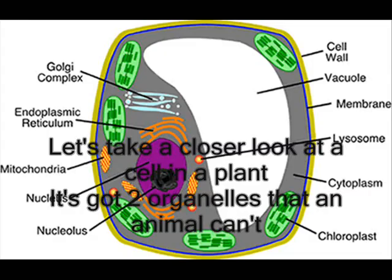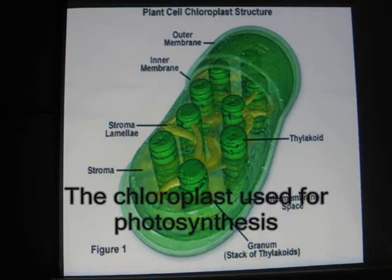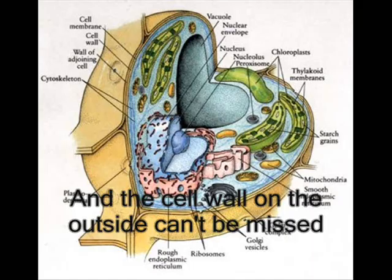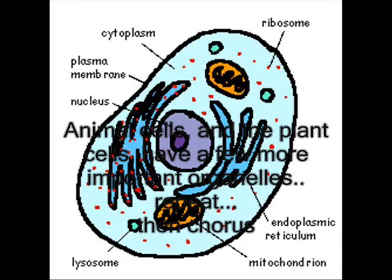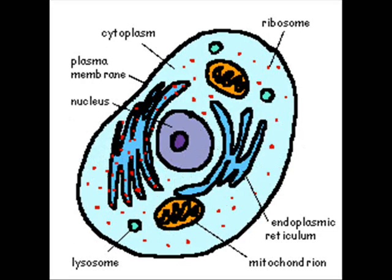Let's take a closer look at a cell in a plant — it's got two organelles that an animal can't. The chloroplast is used for photosynthesis, and the cell wall on the outside can't be missed. Animal cells and plant cells have a few more important organelles.